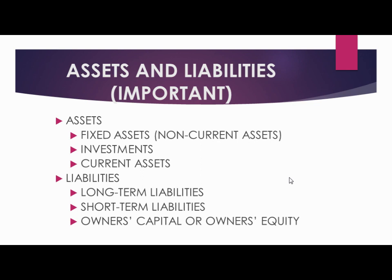Next is current assets — again a part of assets which can be utilized within an accounting period, also called the accounting cycle. A question might ask the other name of accounting period, which is the accounting cycle, whichever is longer. Current assets include cash, cash equivalents, and anything that can be quickly sold or converted to cash.